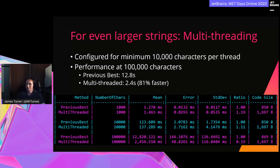To put it in perspective, our baseline can't even run at 100,000 characters. We can scale further on more cores than the eight I ran this benchmark on. To avoid the performance regression at short strings, we can have both a multi-threaded and non-multi-threaded path, switching depending on string length — the best of both worlds.